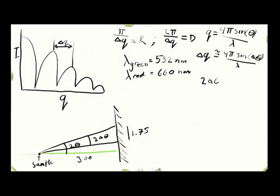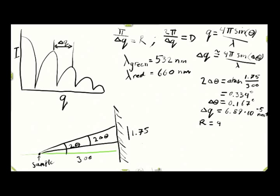So we now start calculating the scattering angle. 2Δθ is the arctangent of 1.75 over 300, which comes out to 0.334 degrees. So that means that Δθ is 0.167 degrees. Plug this into our equations, and we find that Δq is 6.89 times 10 to the minus 5, and of course this is inverse nanometers, because our wavelength of our lasers, which we've plugged into our equations, is in nanometers.